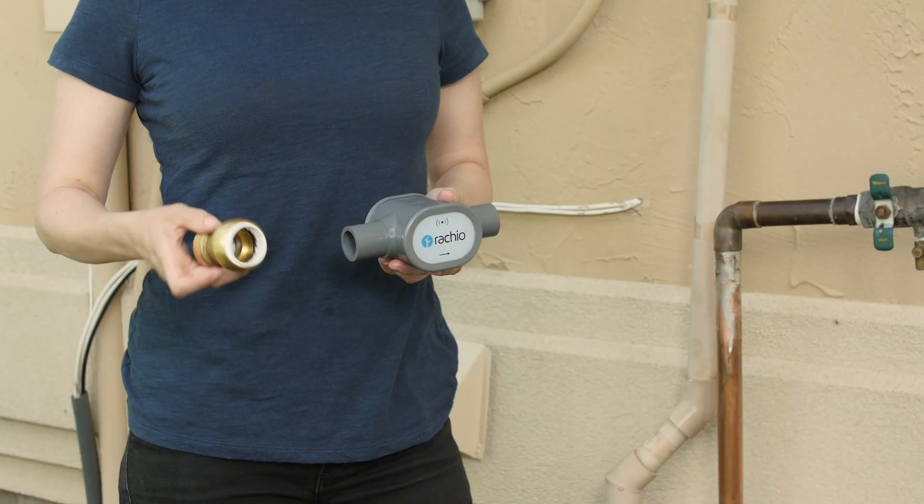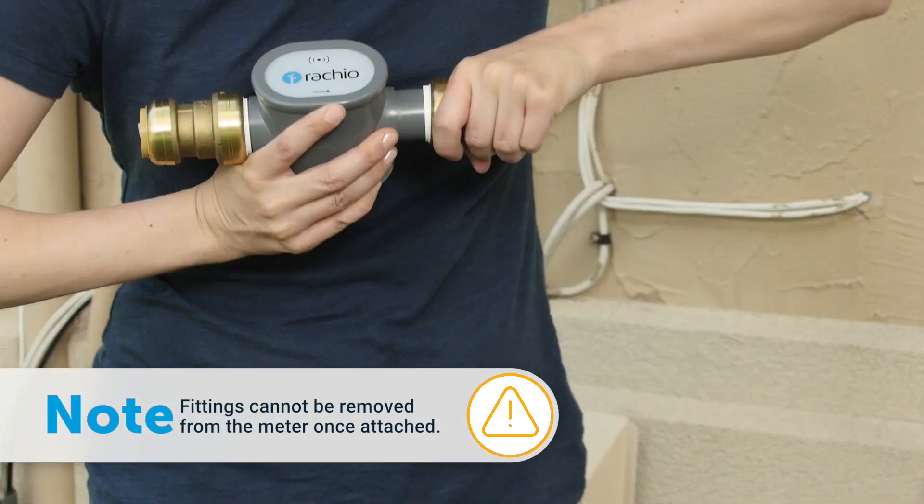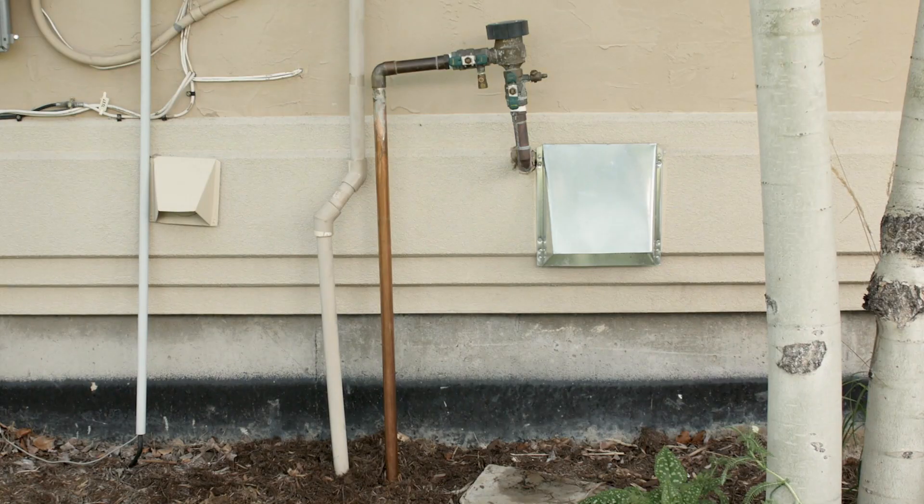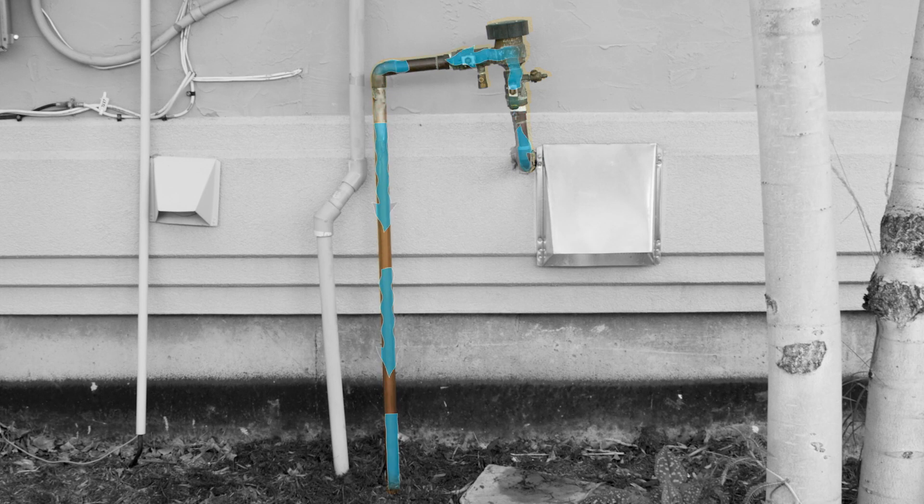Next, twist the 1-inch PVC end of each fitting onto the flow meter until they are nearly flush with the meter housing. Water flows from the backflow preventer to the valve box. The flow meter must be installed in between the two.